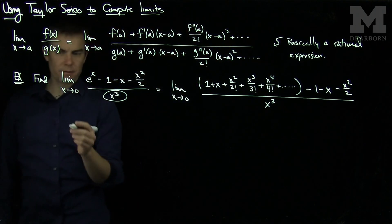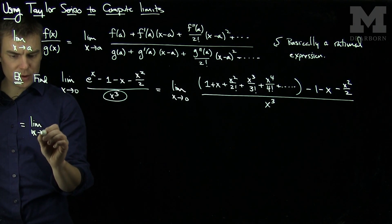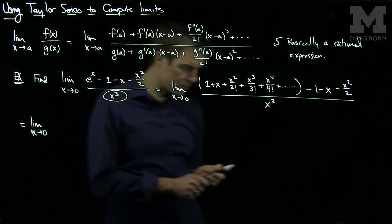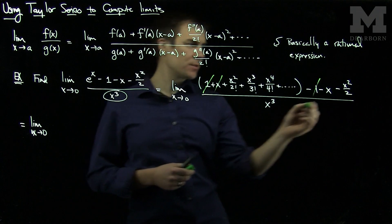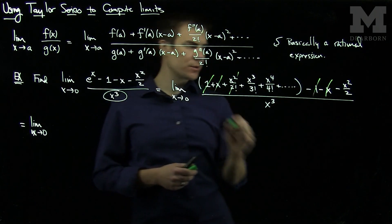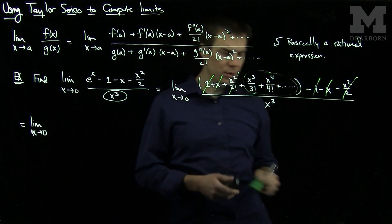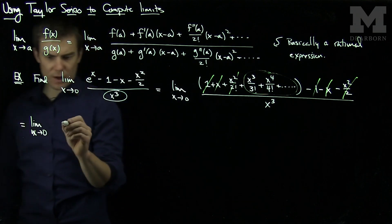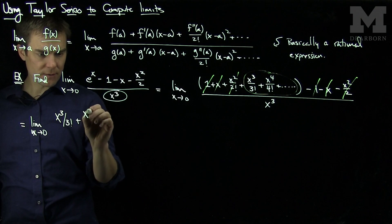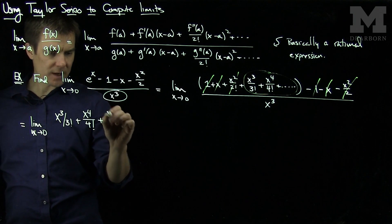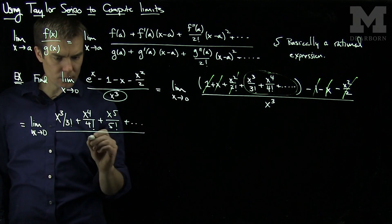After simplifying, we look at what cancels. The 1 cancels, the x cancels, and the x²/2 cancels with x²/2. We're just left with the numerator being x³/3! + x⁴/4! + x⁵/5! + ... all over x³.